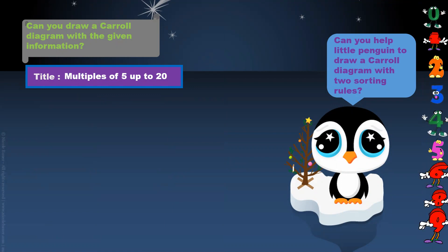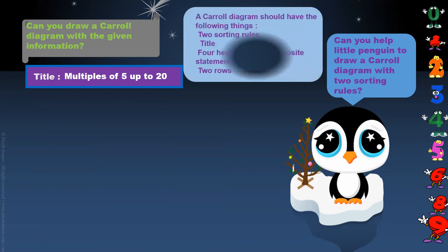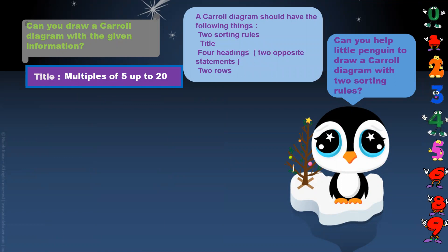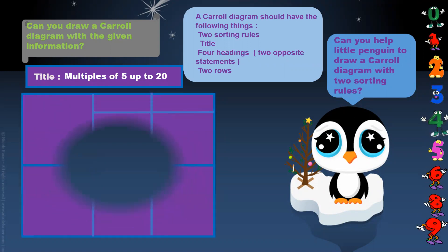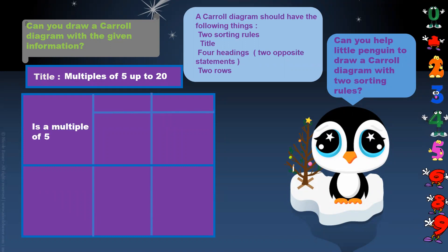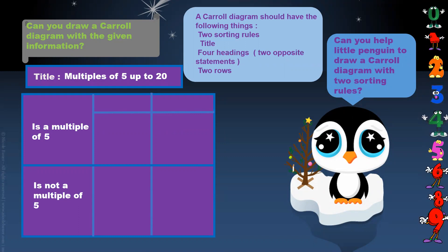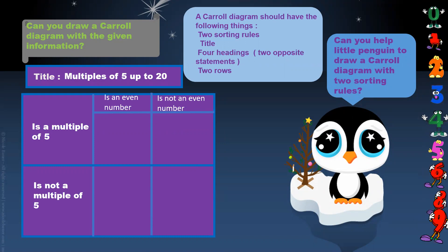Can you help little penguin to draw a cattle diagram with two sorting rules? A cattle diagram should have the following things — it is very important to remember, children: two sorting rules, a title, four headings, two opposite statements, and two rows. Title: multiples of 5 up to 20. The headings are: is a multiple of 5, is not a multiple of 5, is an even number, is not an even number.